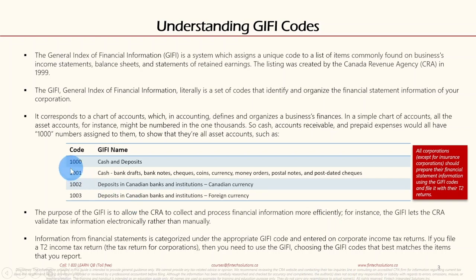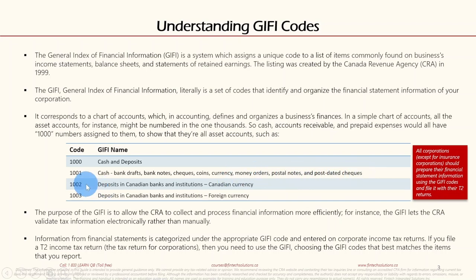For example, assets all start with number 1000. So 1000 is for cash and deposits; 1001 is cash — bank drafts, bank notes, checks, coins, currency, money orders, postal notes, and post-dated checks; 1002 is deposits in Canadian banks and institutions in Canadian currency; 1003 is deposits in Canadian banks and institutions in foreign currency. All corporations except insurance corporations should prepare their financial statement information using GIFI codes.